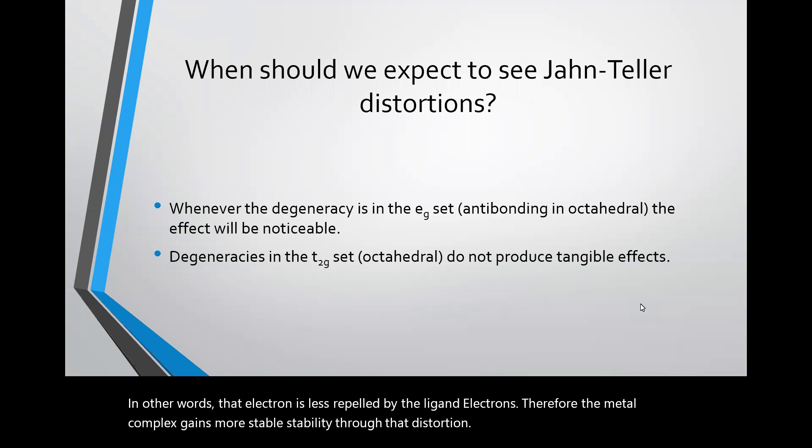So when should we expect to see Jahn-Teller distortions? Basically, we will see them whenever the degeneracy is in the set of orbitals that is most directly pointed at the ligands. So for an octahedral complex, that's the eg* set.